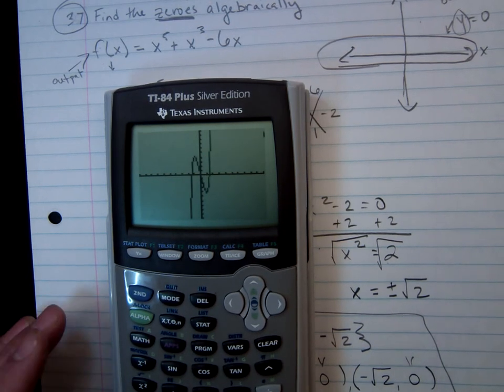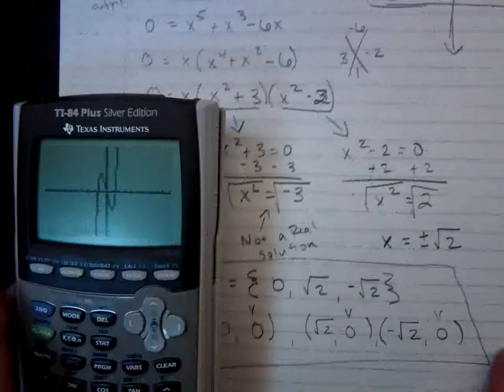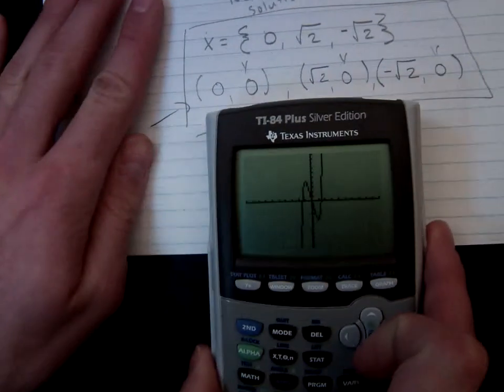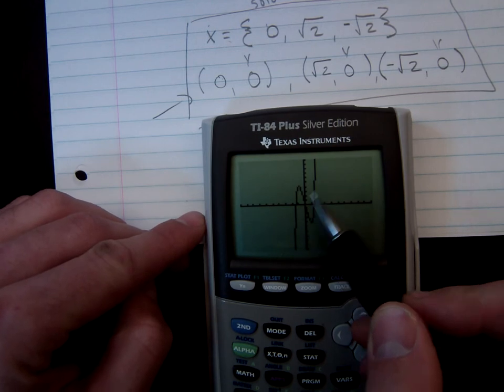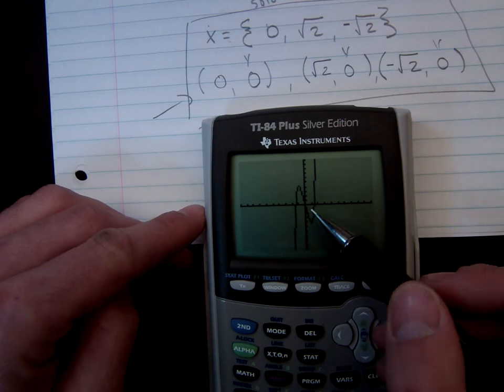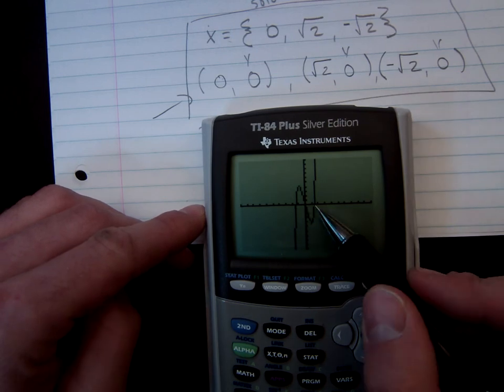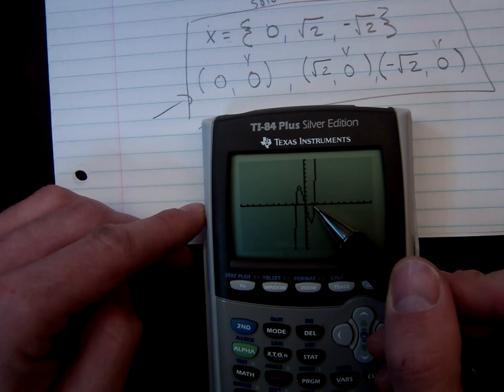And taking a look at my graph here, I can see that as it's supposed to, I have an x-intercept right over here at negative square root 2. It's a little above 1, which if you plug negative square root 2 in, you'll see that it's a little above 1 there. At 0 and right over here at square root 2.